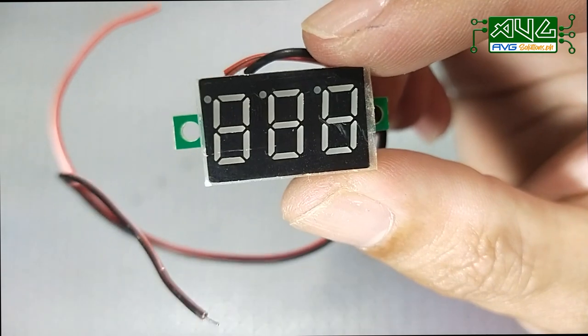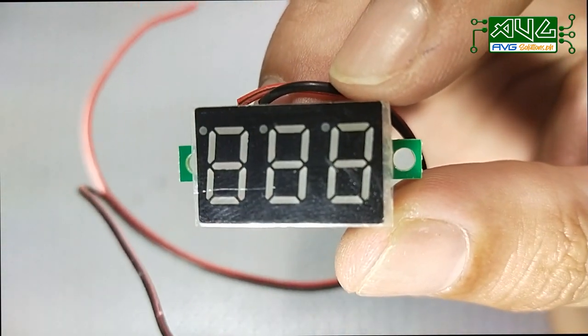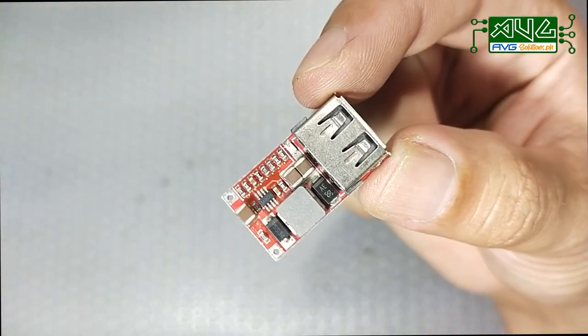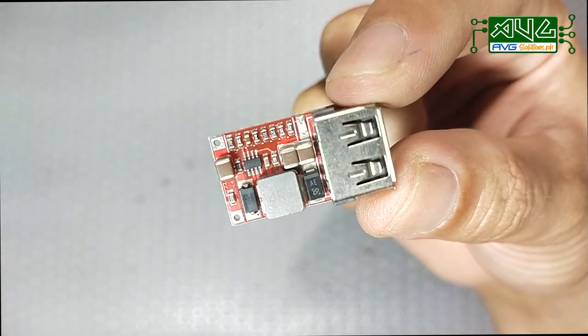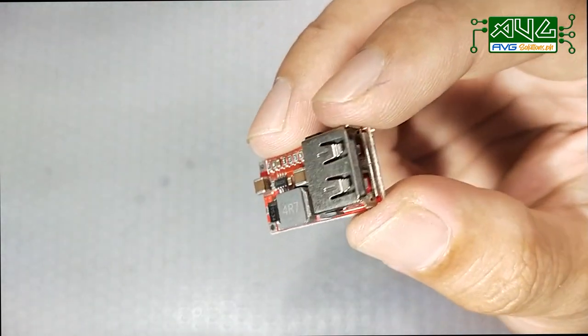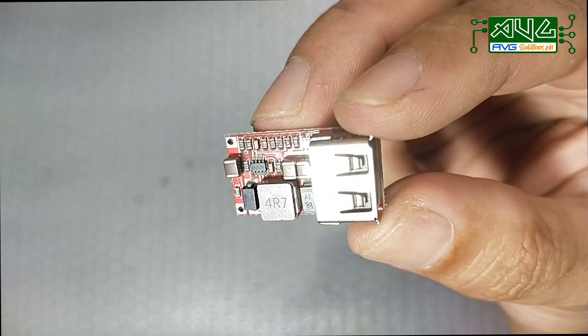Nagprovide na rin ako ng mini digital voltmeter para mamonitor natin yung charge ng ating powerbank. At itong ganitong klase ng USB step-down module ang gagamitin natin para makapagproduce tayo ng regulated 5V na output.